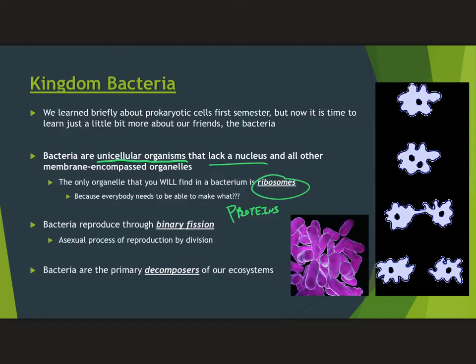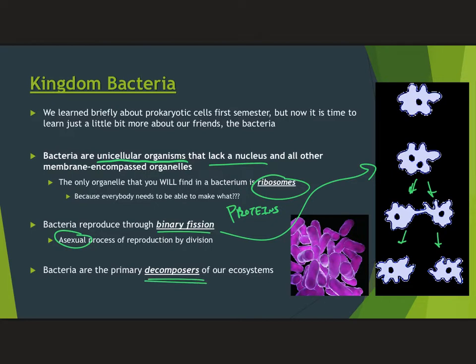In terms of reproduction, bacteria perform binary fission, which is a form of asexual reproduction. Fission means to split apart, and this fission splits the cell into two — that gives us 'binary fission.' This is similar to mitosis, but it's not quite as well-structured or organized as eukaryotic mitosis. Bacteria are also primary decomposers in our ecosystems, playing a very important role in recycling organic nutrients back into the ecosystem, basically after organisms die and decay.